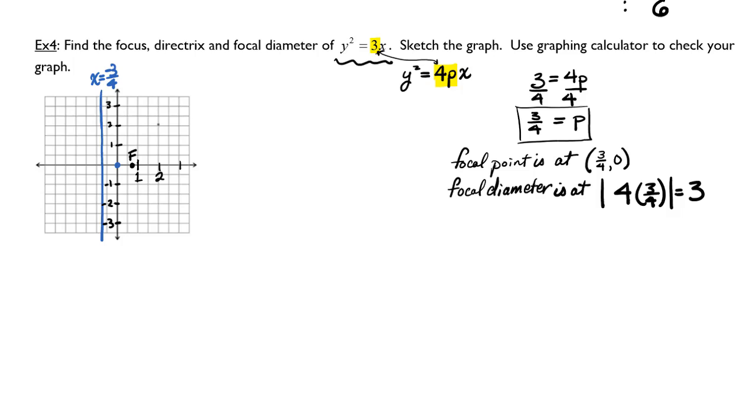So my focal diameter is at 3, which means I have to go 1.5 up from the focus and 1.5 down from the focus. And then I just connect the dots.